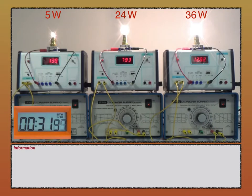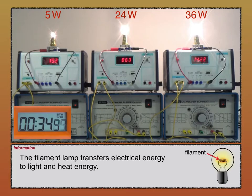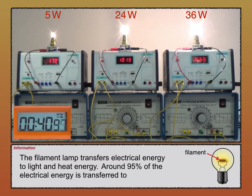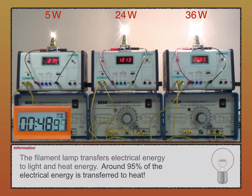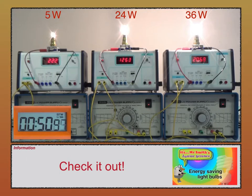In this experiment, all three lamps are filament lamps. With a current in the wire filament, it's heated to such a high temperature that it glows white hot. This type of lamp is very inefficient, as around 95% of the electrical energy is transferred to heat. If you want to know more about energy-saving light bulbs and why they're more efficient, then take a look at this video on my junior science channel.